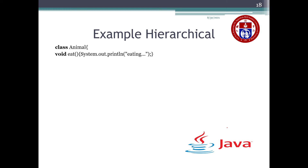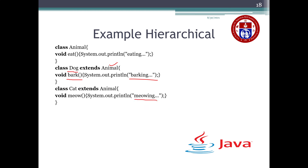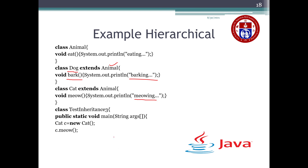For the hierarchical inheritance example, Animal is the parent class with method eat. I create two child classes: Dog extends Animal with method bark printing 'barking', and Cat extends Animal with method meow printing 'meowing'. In the main function I create an object c for Cat. Calling c.meow() prints 'meowing' and c.eat() prints 'eating'.